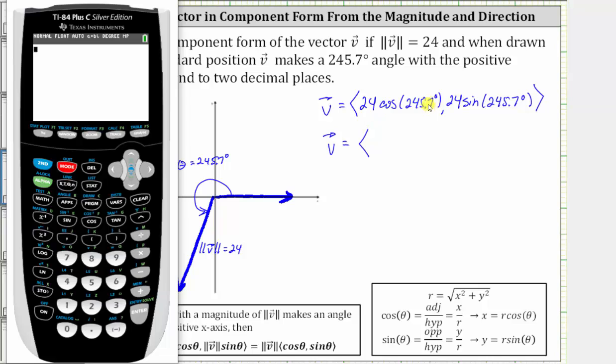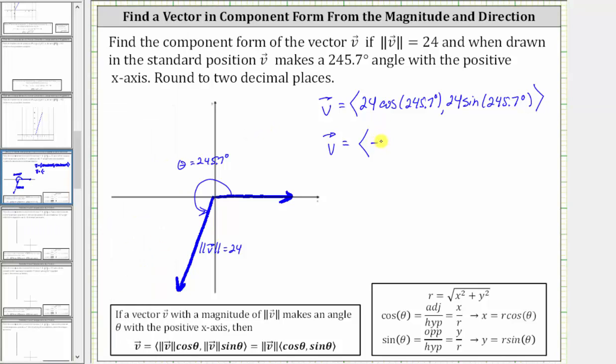The x-component is 24 times cosine of 245.7 degrees. We're told to round to two decimal places. Notice in the third decimal place, we have a six, which indicates we round up to negative 9.88. So the x-component is approximately negative 9.88.